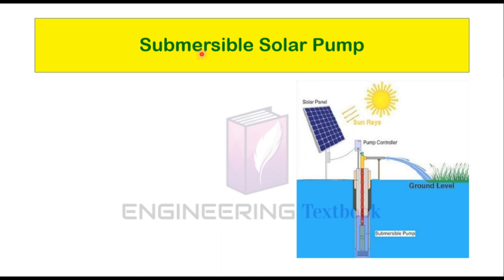Submersible solar pump. As the name suggests, the pump is submerged in the water. When the sun is shining, the solar panels generate electricity. This electricity is passed through the pump controller and the pump pumps the water during the entire day, and the water is stored in a tank to be used when needed. Water can't be pumped in bad weather because the sun can't shine, so it is advisable to store water only in good climatic conditions.